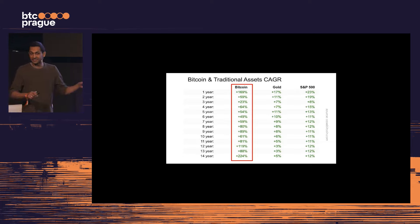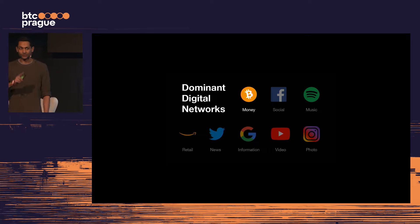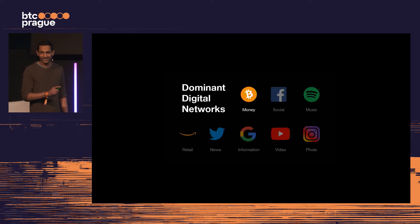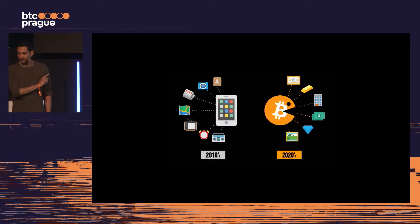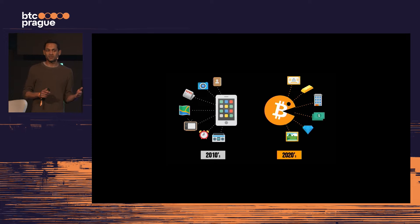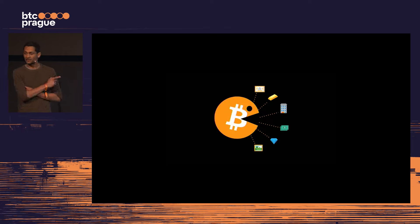Bitcoin is the hardest money, and at this point that's fairly irrefutable — we have the data. Because Bitcoin is only transacted on the Bitcoin network, that network is going to become the dominant digital network. It will accrue the most users, the most capital, and the deepest liquidity. In the 2010s you saw the dematerialization of consumer goods, and now in the 2020s we're watching the dematerialization of monetary goods. When a harder form of money emerges, it does so by draining the monetary premiums that have nested in all those other desirable scarce assets.